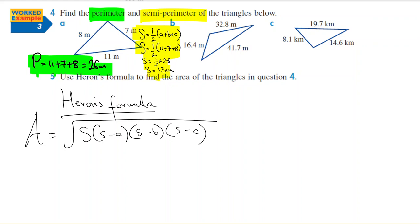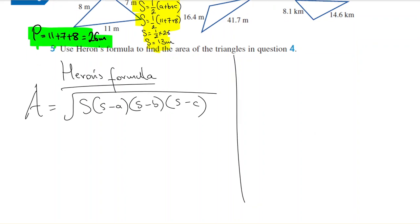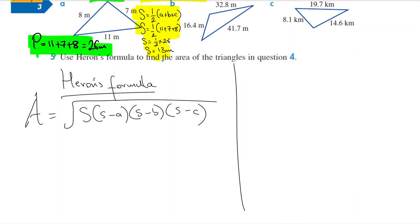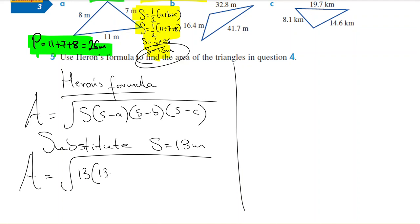Okay, so how do I calculate? Once I've got my s, that's my s value of 13, I can use that and substitute. So substitute s equals 13 meters. Anywhere in that equation I substitute s equals 13. So let's keep going. Area equals square root of 13, put brackets, 13 minus what was my a?